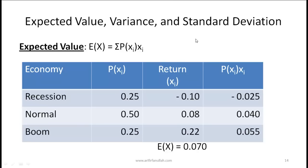Expected value, variance, and standard deviation are applications of probability. For example, consider the returns on a stock that vary depending on the state of the economy. If the economy is in a recession, the probability is 0.25 and the return is -10%. In a normal state, the probability is 50% and the return is 8%. In a boom, the probability is 0.25 and the return is 22%. If you don't know which state will occur, how do you calculate the expected value of your return?